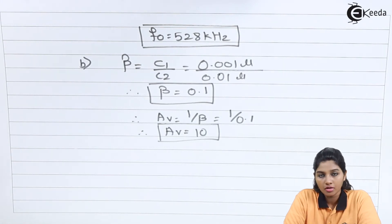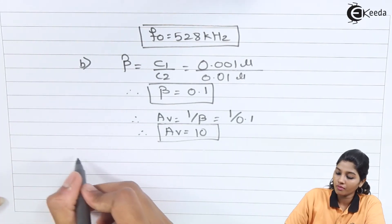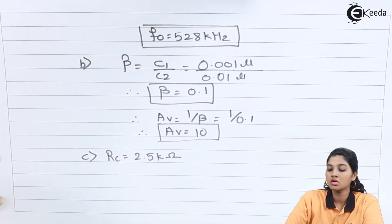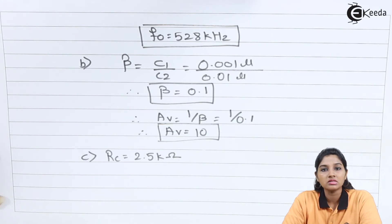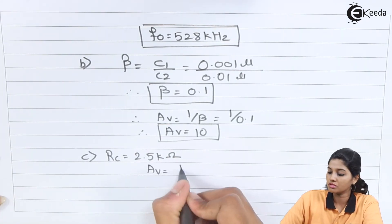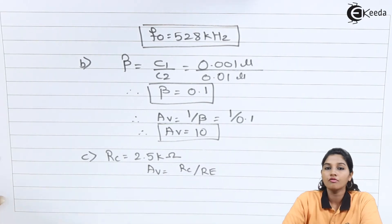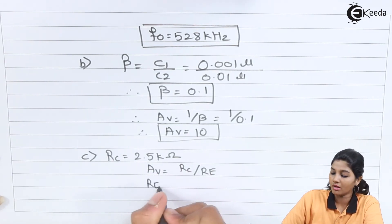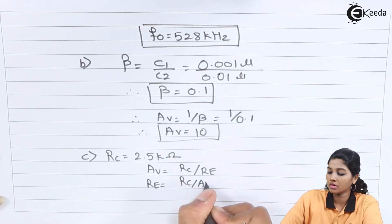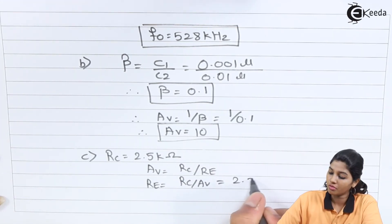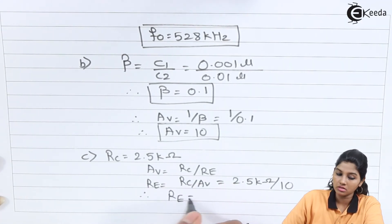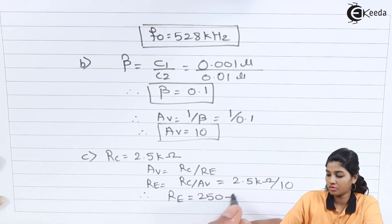Using this value of Av, find emitter resistance Re given Rc = 2.5 kΩ. The relationship is Av = Rc/Re, so Re = Rc/Av = 2.5 kΩ / 10 = 250 Ω.